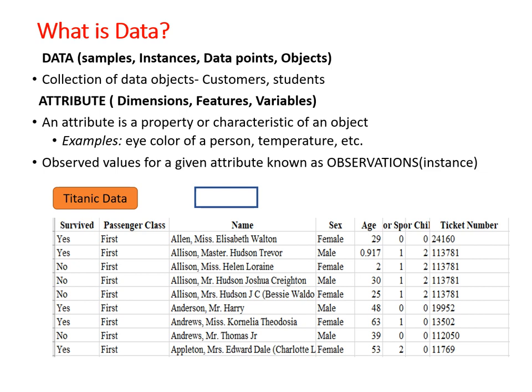Data can be any raw facts, figures, samples, or instances — like customer data or student data. Attributes are the characteristics or features of the data, also called dimensions, features, or variables in data mining. Records in a database are called instances or observations.